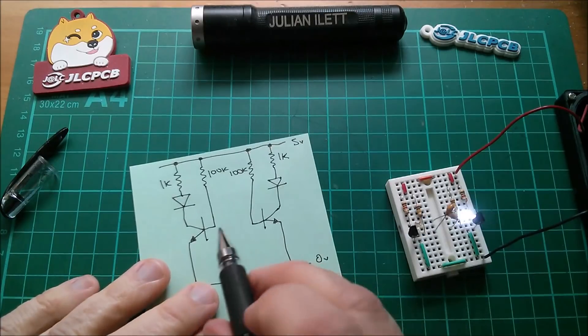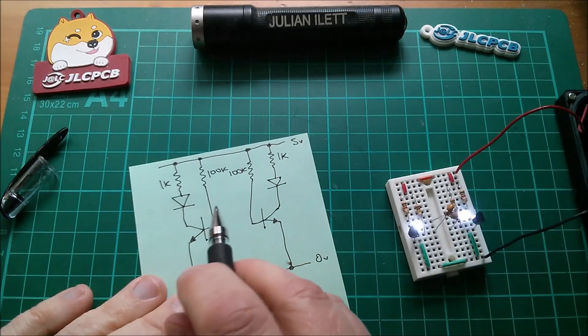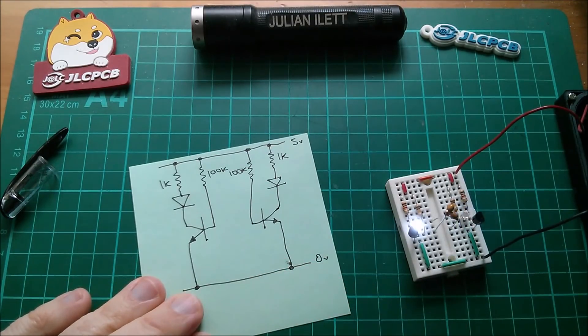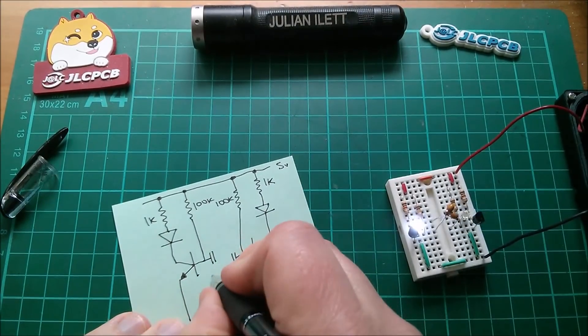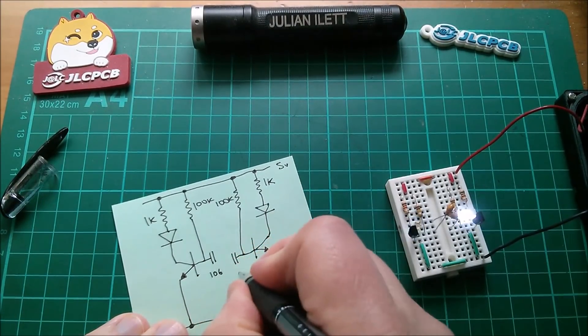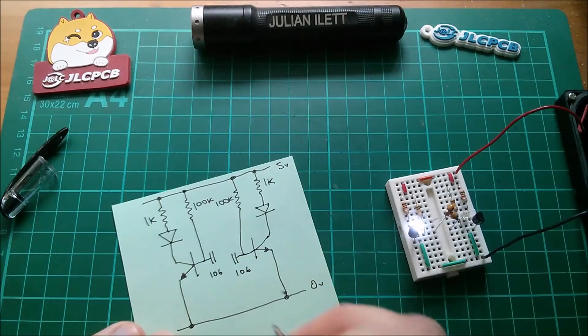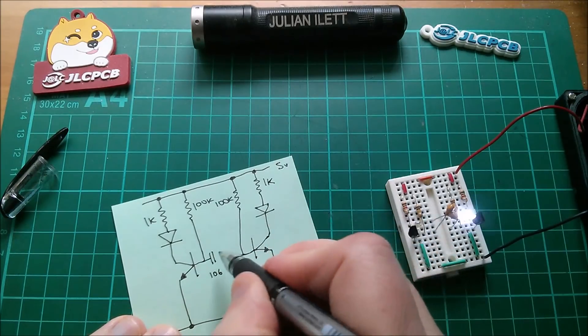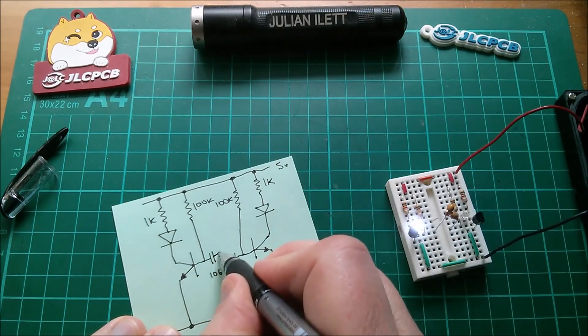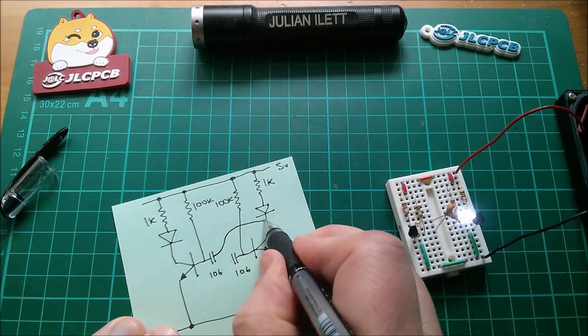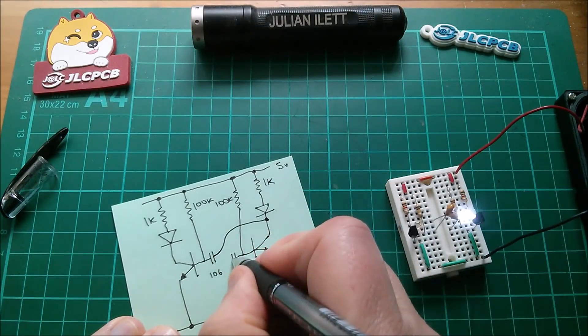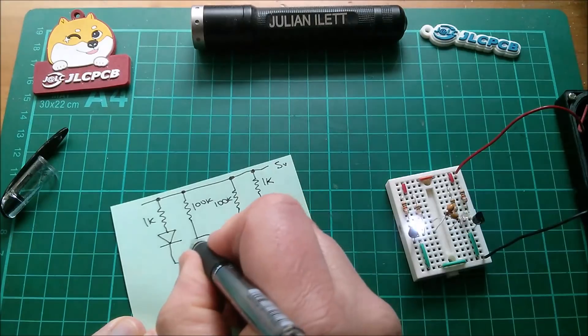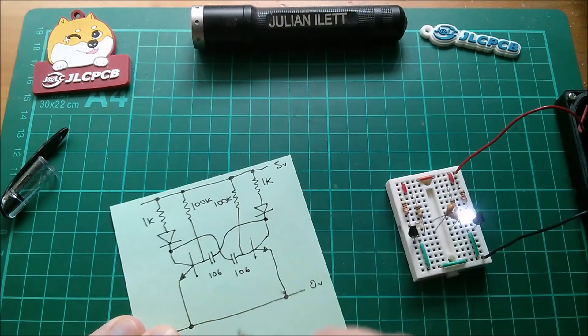So let me draw in the two capacitors and show the two options for where I can connect them. So here are my capacitors, 10 microfarads. So that's 106. And normally you would connect the left-hand side up to the collector on the right-hand side. And this right-hand capacitor would connect up to the collector on the left-hand side circuit. That's how you'd normally draw this.